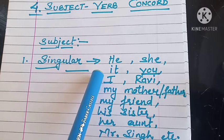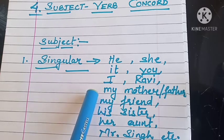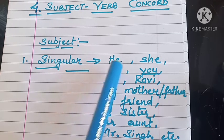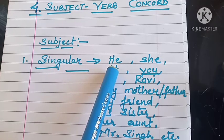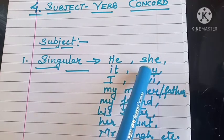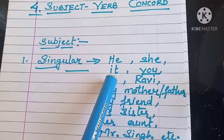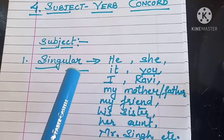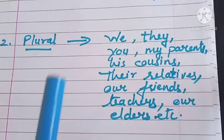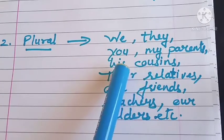So children, in all these subjects, what is common is their number — they are one in number. He refers to a boy or a man, she refers to a girl or a woman, it refers to a thing or an animal. Now let's see the plural form of the subject: we, they, you,